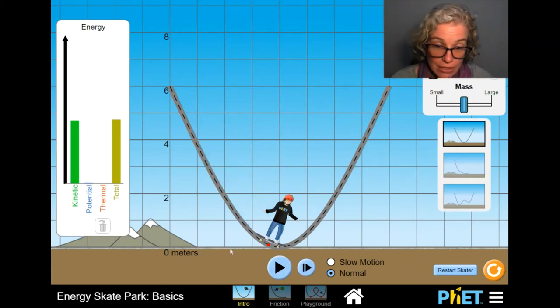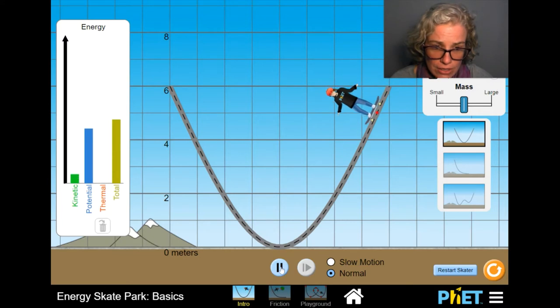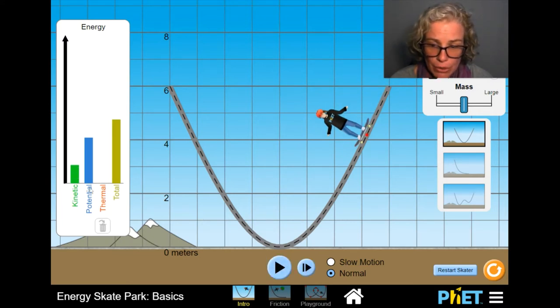So what we're doing is we're transferring the energy from potential to kinetic to potential to kinetic back and forth. We're converting it, but we're not destroying it. And that's why the total energy stays the same. So if I pause here at the bottom, the skater's not above the ground, so there's very little potential energy. Almost all the energy is in motion, and that's also the fastest part of the ramp.